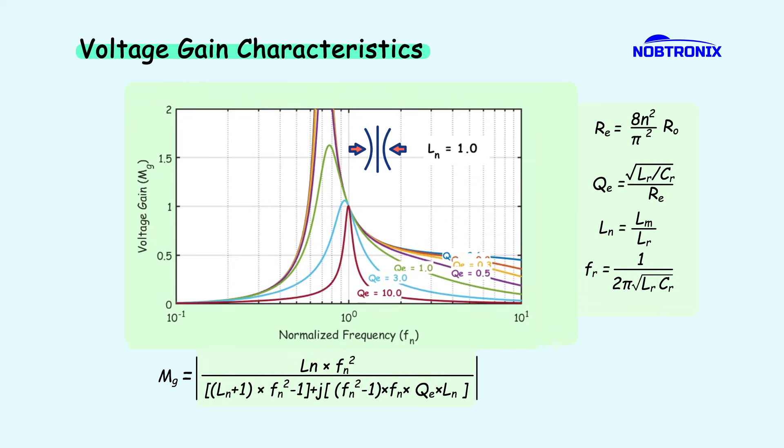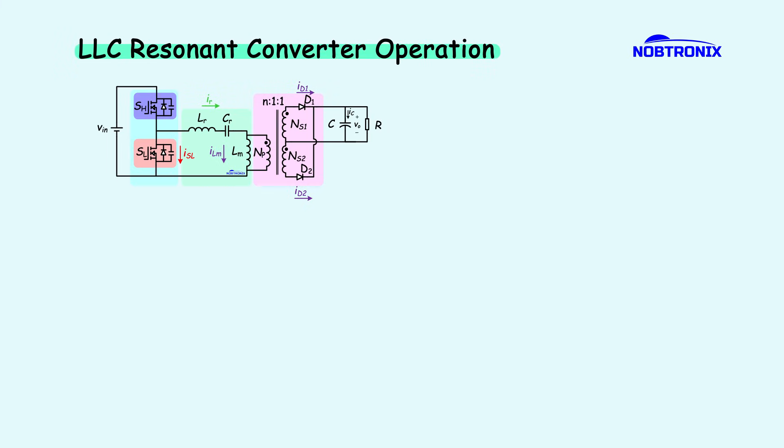So, in resonant converters, the switching frequency acts as the control parameter. By adjusting the switching frequency, the controller regulates the output voltage across different load conditions. Now let's take a closer look at this diagram and the operation of the converter.